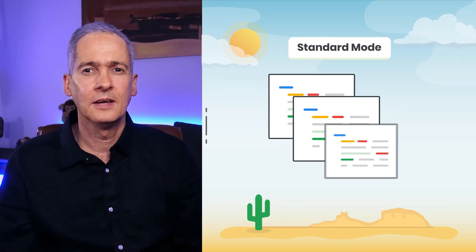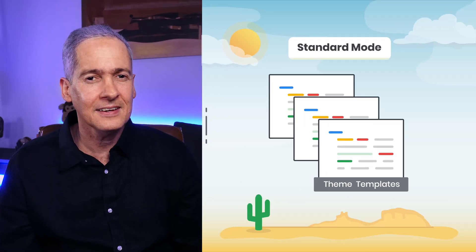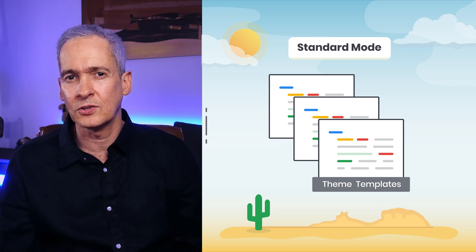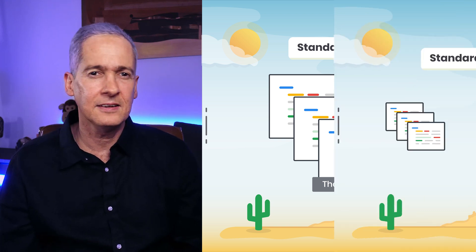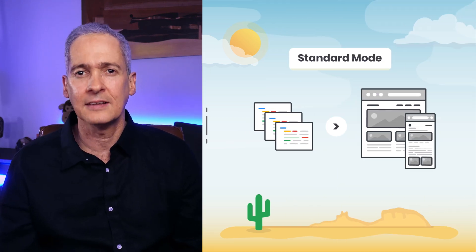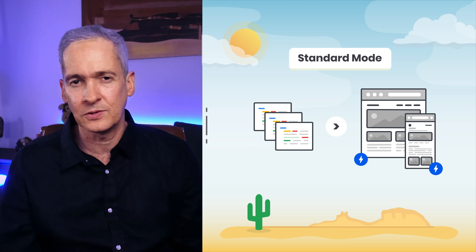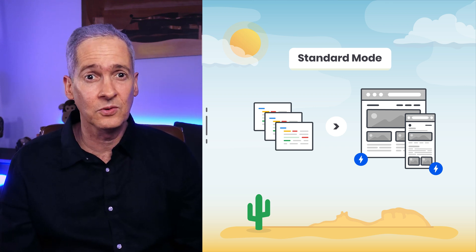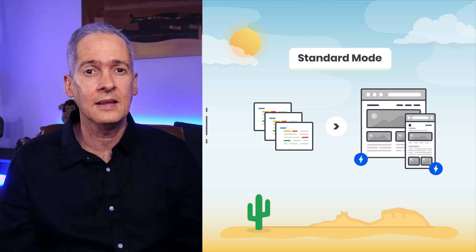In standard mode, there is a single set of theme templates for rendering your content, and there is only one version of your site: the AMP version.